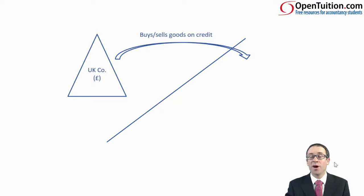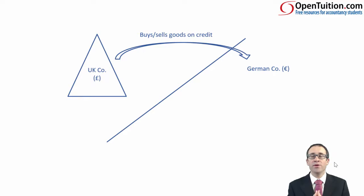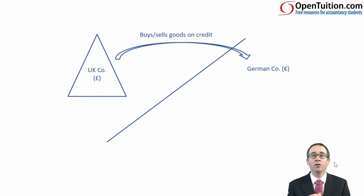What we looked at was what happened if we bought or sold goods on credit with a country overseas — so, a German company. That German company has a functional currency of the euro. We looked at what happened when we initially recorded the transaction — that was recorded at the historic rate. Then, at the reporting date, we did an exercise whereby we looked at any monetary items that we re-translated at the closing rate. Any exchange gains and losses then went through profit or loss. We also looked at non-monetary items, and those non-monetary items we left and did not re-translate.